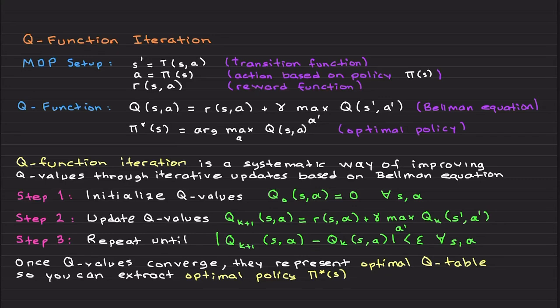Welcome back. In the previous lecture we introduced Q-functions and the Bellman equation for deterministic systems. The key idea behind dynamic programming is that we can iteratively update the Q values to compute the optimal policy. Now we've covered all the materials to start exploring Q-function iteration, which is a systematic way of improving Q values through iterative updates based on the Bellman equation.